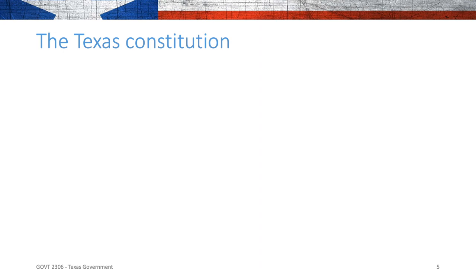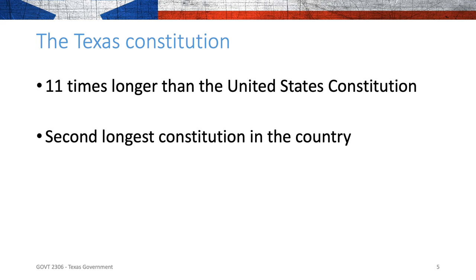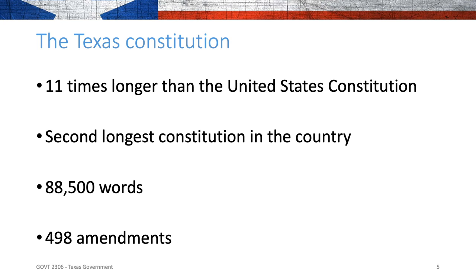Let's talk about how the Texas Constitution compares to others. The Texas Constitution is long — it is 11 times longer than the United States Constitution and is the second longest Constitution in the United States. It has 88,500 words, which is a lot. Just for reference, novelists usually shoot for about 100,000 words in a novel. It has 498 amendments, which is a lot. It's really just a very onerous document.